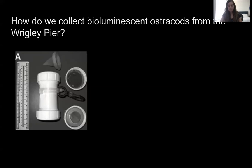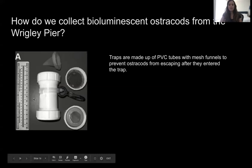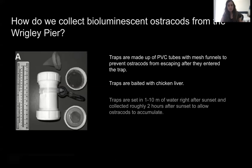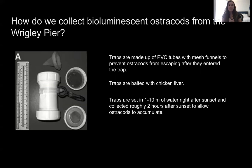We collect bioluminescent ostracods from the Wrigley Pier using PVC tubes with mesh filters on the sides, baited with chicken liver — they love chicken liver. We tie about six traps to each rope line and have about eight to ten lines, then throw them over the pier after sunset because ostracods are nocturnal. We collect them roughly two hours after sunset to allow ostracods to accumulate, pull the ropes back up, put them in buckets, and take them up to the Wrigley facility where sea tables are set up for sorting.